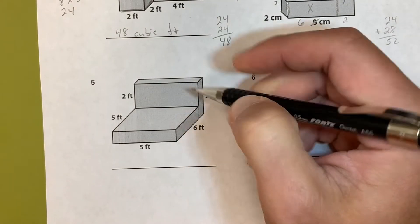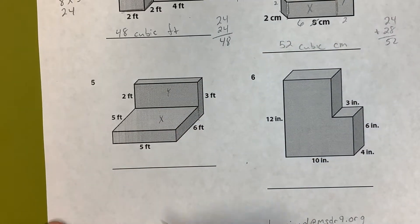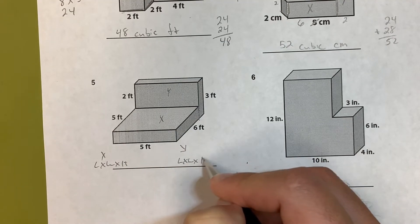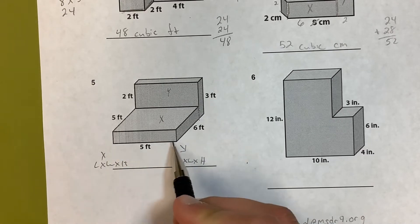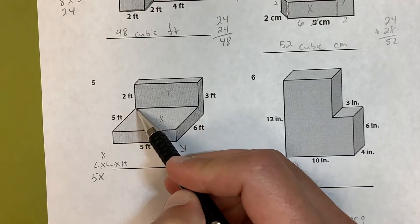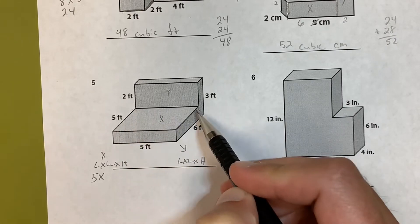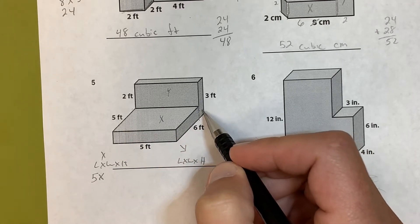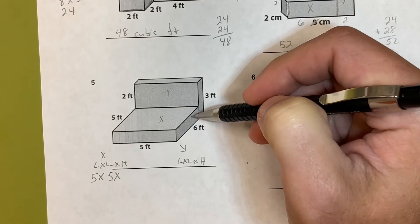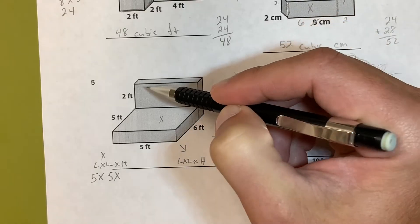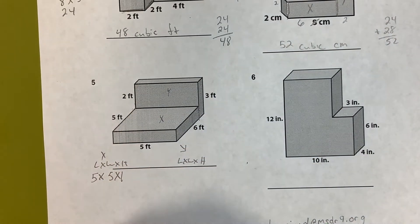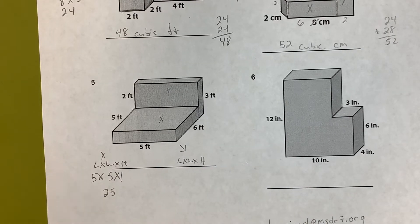Number five — I'm cutting this into X and Y as well. For X: the length is five. The width — the whole thing is six, but since I cut at that axis I use five, not six. The height: the whole thing is three but I only need the height of this portion. Three minus two is one, so the height is one. Five times five is twenty-five, and twenty-five times one is twenty-five.